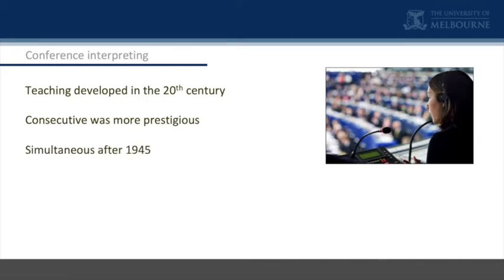There was that heroic age of interpreting, which was consecutive. Simultaneous interpreting was used — I think back in the 1930s — but it became headline news with the Nuremberg trials. It was used after 1945, but was originally looked down on by the stars of consecutive interpreting, who regarded simultaneous interpreting as a telephone operator's magic trick that doesn't really work, as being vastly inferior.